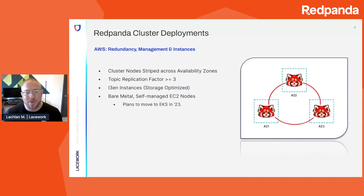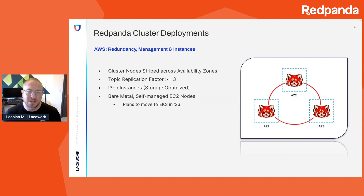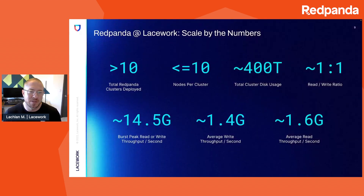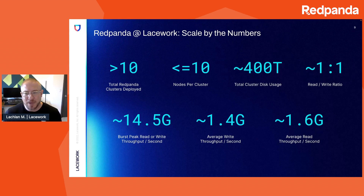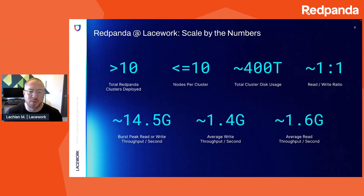A bit about our cluster deployments: we have our cluster nodes striped across availability zones in our cloud providers and a topic replication factor of at least three, both for redundancy. We're currently primarily utilizing the storage-optimized I3 EN instances in AWS, and we run these as bare metal, self-managed EC2 nodes, though we do have plans to move to EKS in 2023. Currently, we have just over 10 Red Panda clusters deployed, but none of these clusters have more than 10 nodes. Our total cluster disk usage is floating somewhere around 400 terabytes, and our read-to-write ratio is fairly balanced at close to one-to-one. Our burst peak read/write throughput is 14.5 GB/s, while our average write throughput is 1.4 GB/s and average read throughput is about 1.6 GB/s.